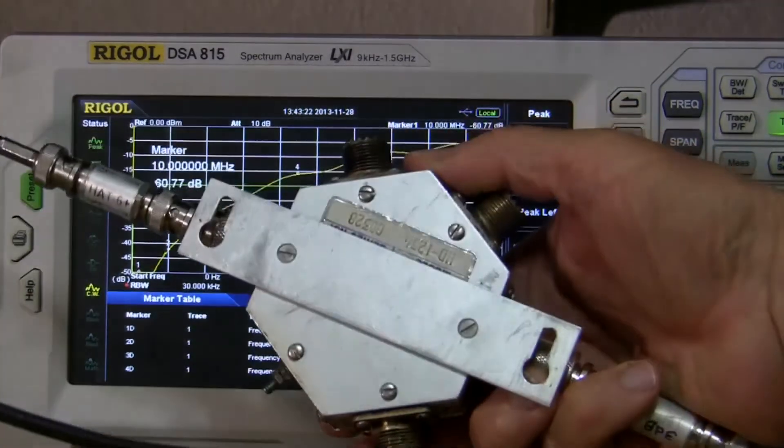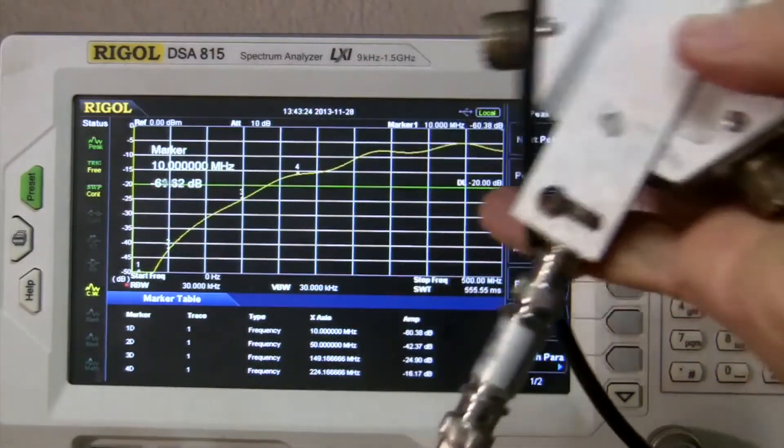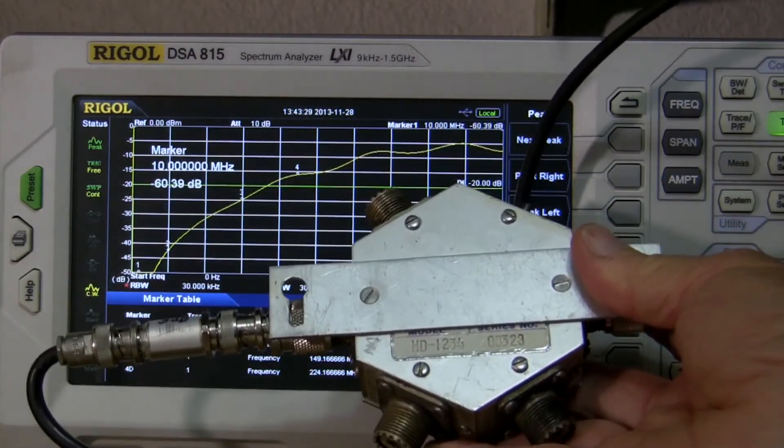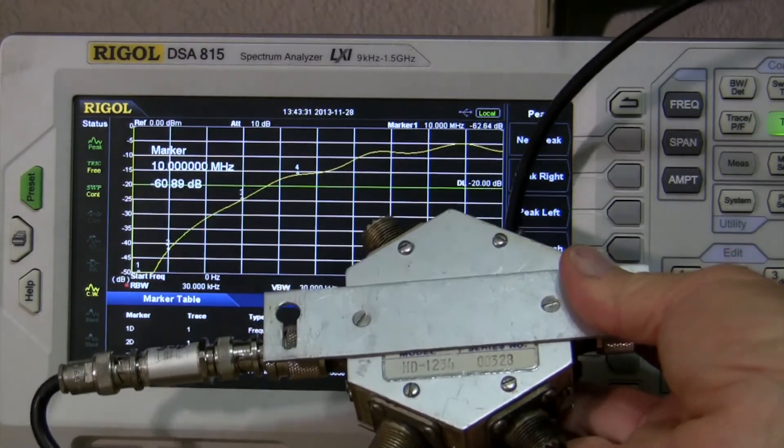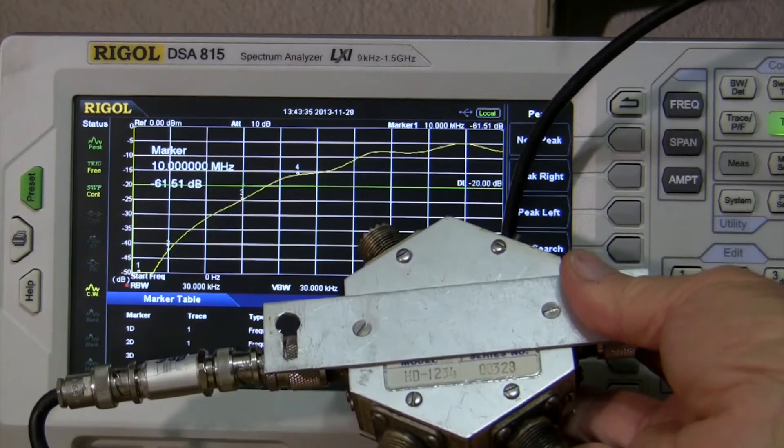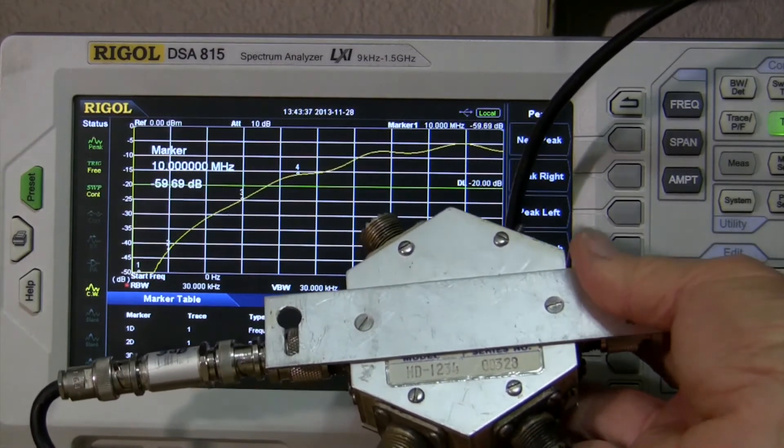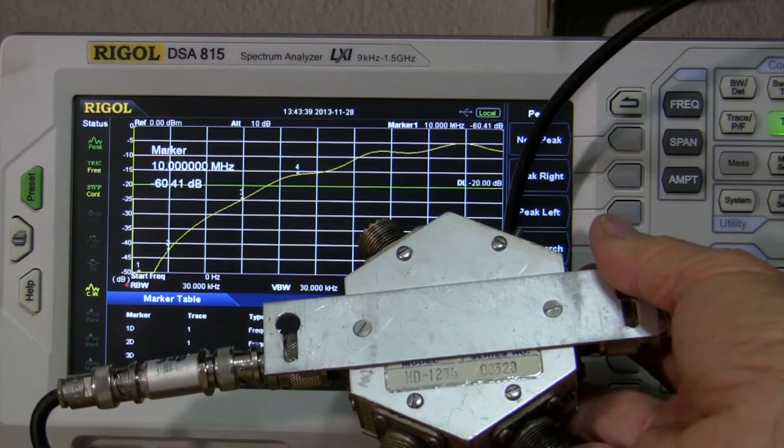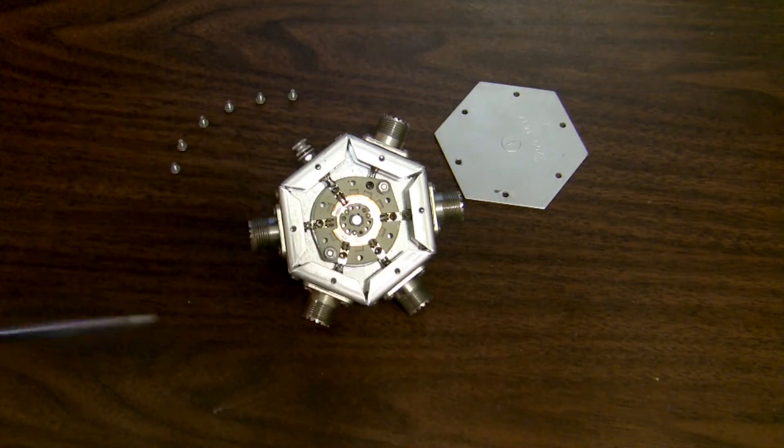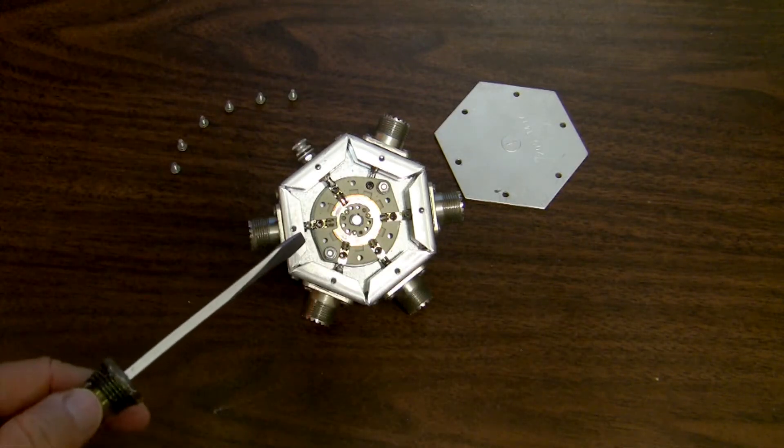This is an old Heathkit HD-1234. I suspect that's a fairly early model, and I'm pretty certain that the spec was only for HF. I thought I'd also do a little teardown of this unit to show you some of the construction.